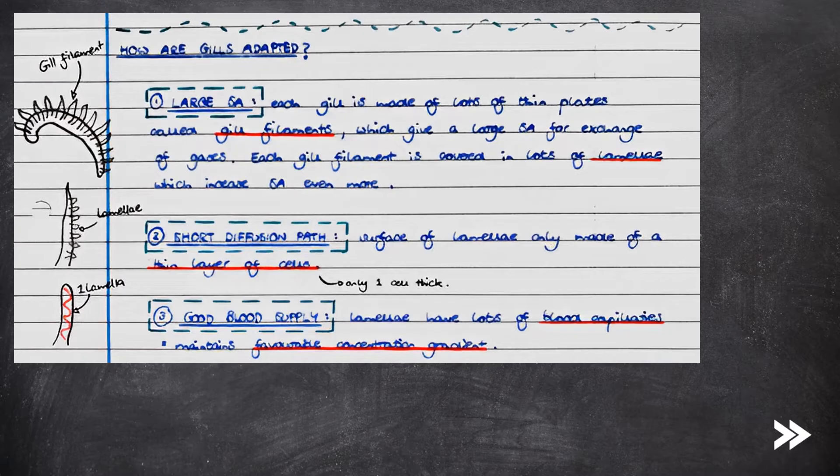So, how are gills adapted? First of all, each gill is made of lots of thin plates called gill filaments, which give a large surface area for gas exchange. Each gill filament is covered in lots of lamellae, which increases the surface area even more. Second, the surface of the lamellae is only one cell thick, which provides a short diffusion path for oxygen and carbon dioxide. The lamellae also have a good blood supply due to the presence of lots of blood capillaries, which maintains a favourable concentration gradient for the diffusion of gases into and out of the blood.